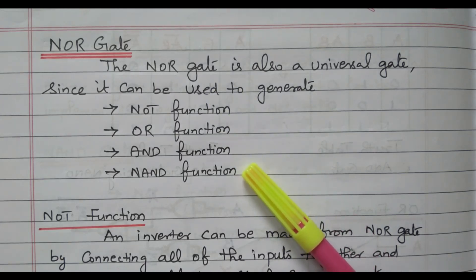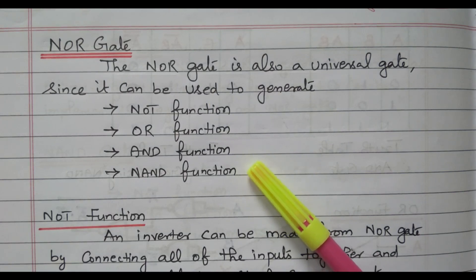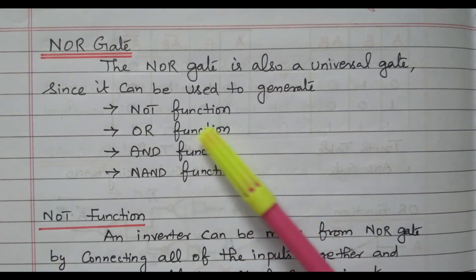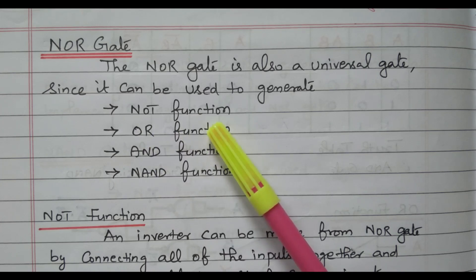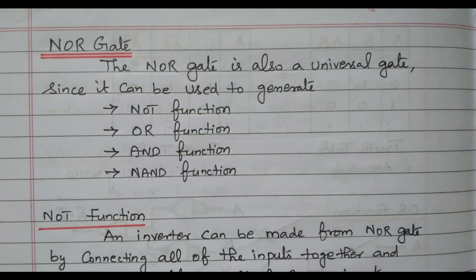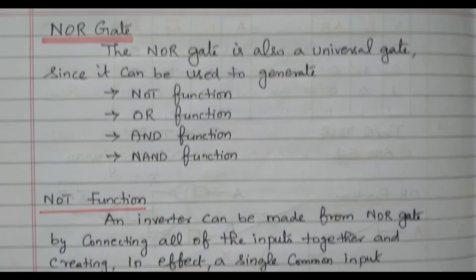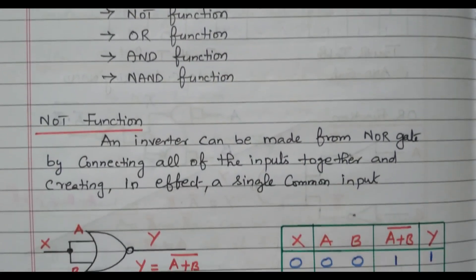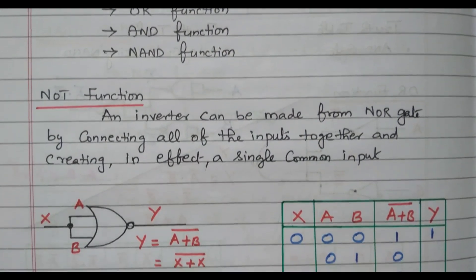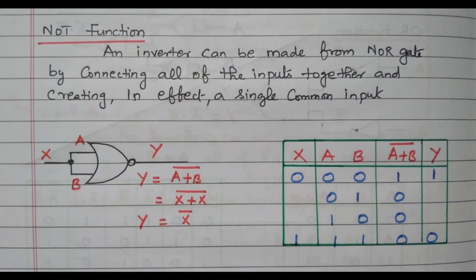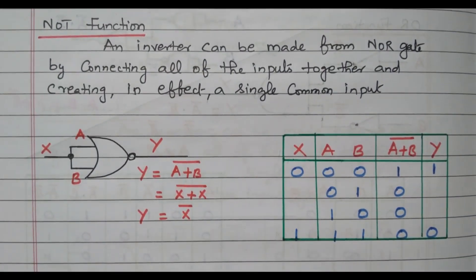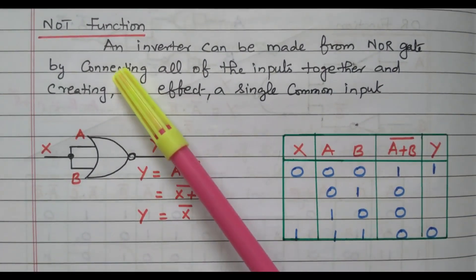The NAND gate functions are available in a separate video. Now we will go to the NOT function — how to perform the NOT function using the NOR gate. The NOR gate acts as an inverter.